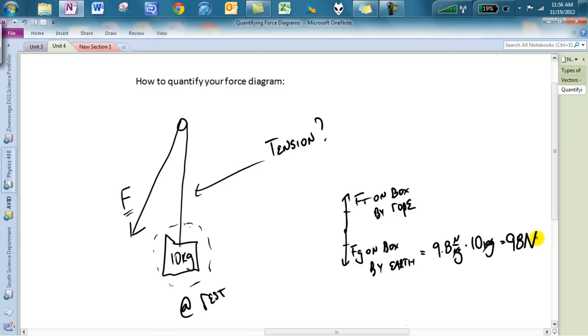And because of our force diagram, you notice that that 98 newtons is equal to the 98 newtons right here as the tension. So if I had to answer the question in the tension, it would be easily stated that the tension is 98 newtons in the rope.